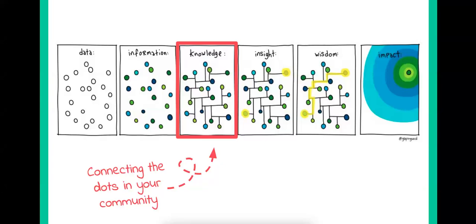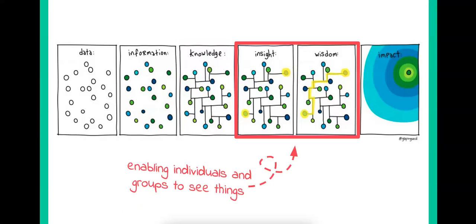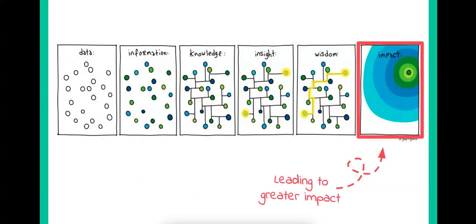Knowledge is specific — meaning is created from information. If we move on to insight and wisdom, what we're doing is enabling groups and individuals to see things, generating insight so people realize things they hadn't realized before. Wisdom, as illustrated in Hugh McLeod's Gabe and Void cartoons, is connecting insights so people can reflect on what's going on — like the experienced teacher in the staff room who knows how to deal with classes. Ultimately, we're trying to generate impact, because every community wants to make an impact on the world.